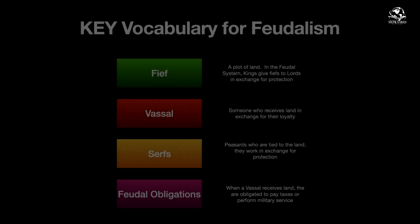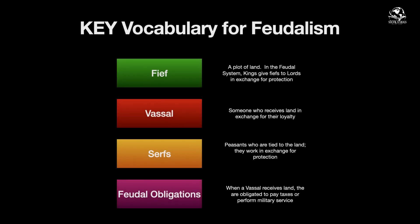Key vocabulary: first, a fief - it's a plot of land in the feudal system. Kings give fiefs to lords in exchange for protection. Next, a vassal - this is someone who receives land or a fief in exchange for their loyalty. So a lord who receives a fief from the king is a vassal to the king.